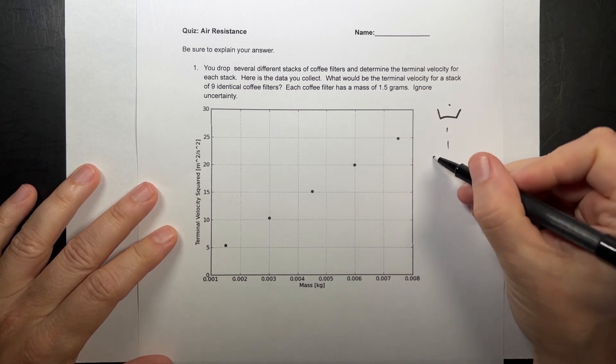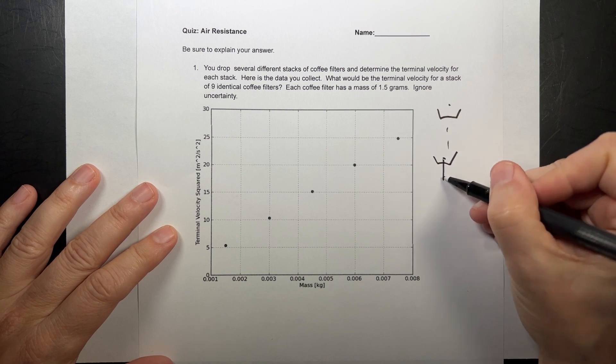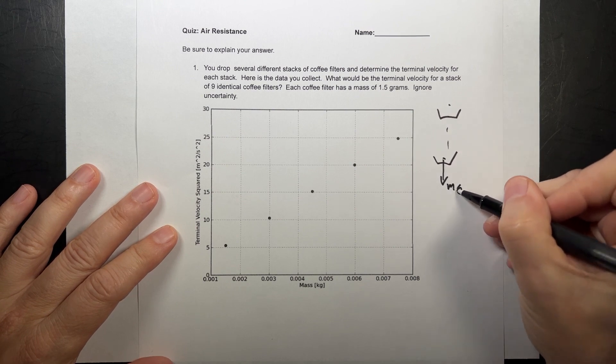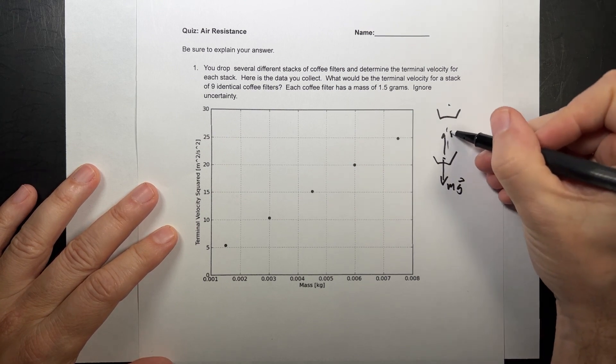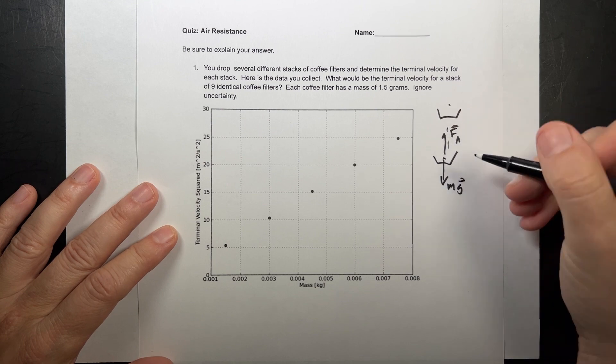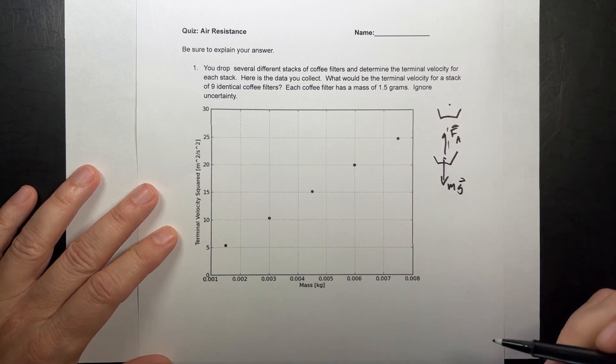Then we measured the terminal velocity. So at terminal velocity, there's a downwards gravitational force and an upwards air resistance force. And those two things would be equal and it would move at a constant speed.